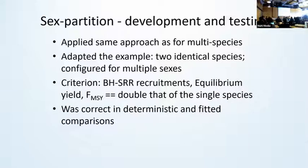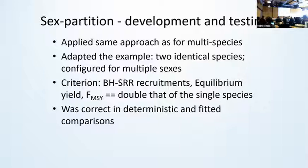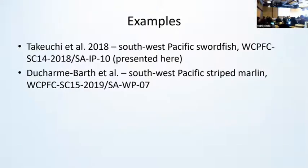For developing and testing the implementation of the sex partition, we followed the same approach as we did for the multi-species. In this different case, we tried to highlight the errors between the use of these partitions. We made the two species that were assumed to be as sexes absolutely identical, so that this would highlight any coding errors and problems. The test criterion was whether the Beverton-Holt stock-recruitment relationship and the equilibrium yield calculations for the multi-sex case would be an exact sum of that obtained for the two identical species. And the tests proved positive after quite a long time of debugging and improving.